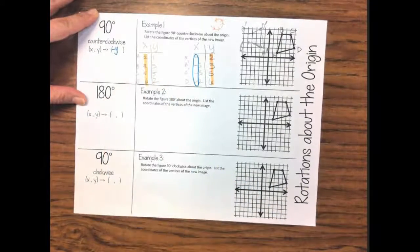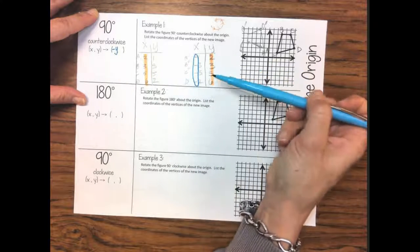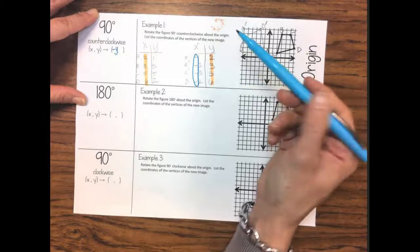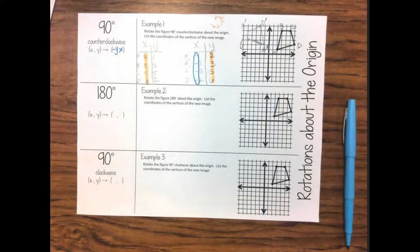And the x values are now in the y column but they did not change at all so we're not going to put a negative, we're just going to put an x there. And that's how you write a rule for a counterclockwise rotation.